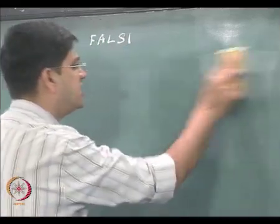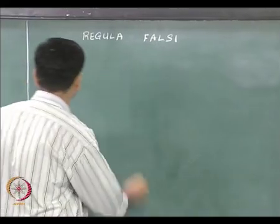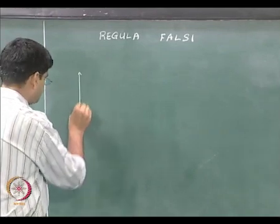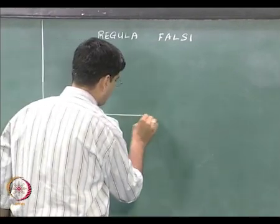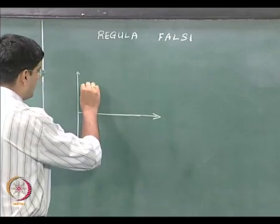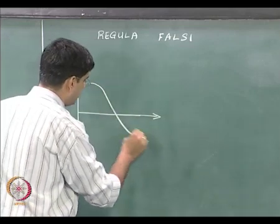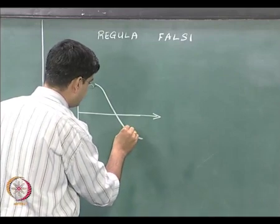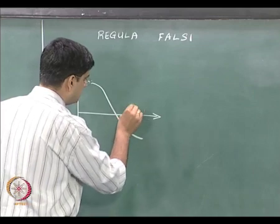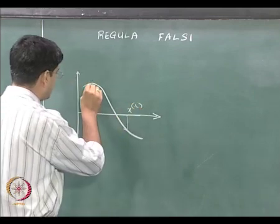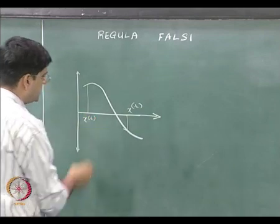Let us just recap what we did with respect to Regula Falsi. Let us say we have a curve of this type and we started off with x_r and x_l.